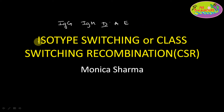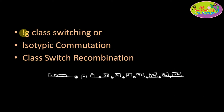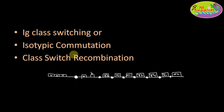We are going to talk about isotype switching, also known as class switching recombination or CSR. Isotype switching is also known as immunoglobulin class switching, isotypic commutation, or class switch recombination.